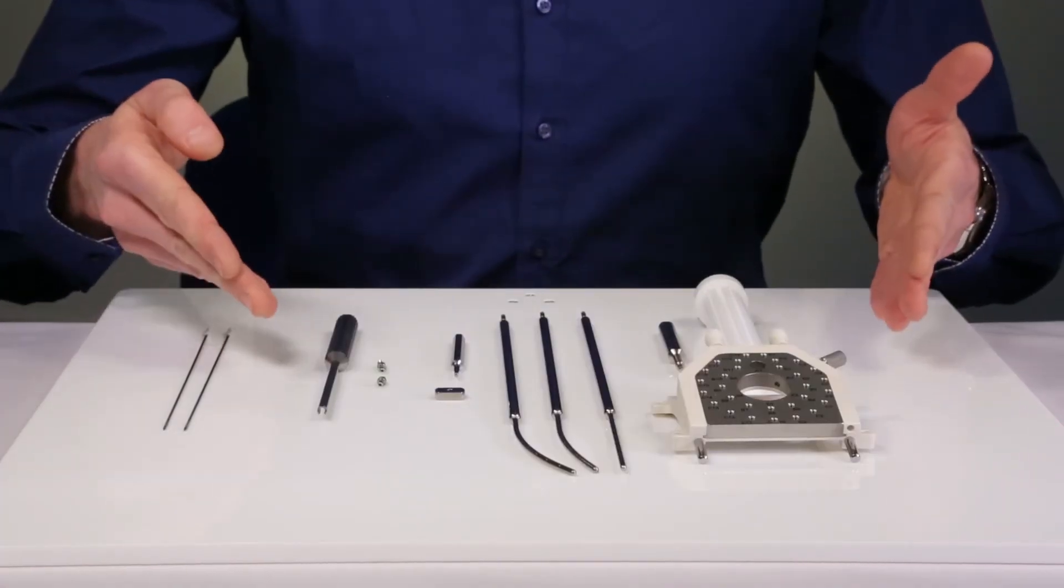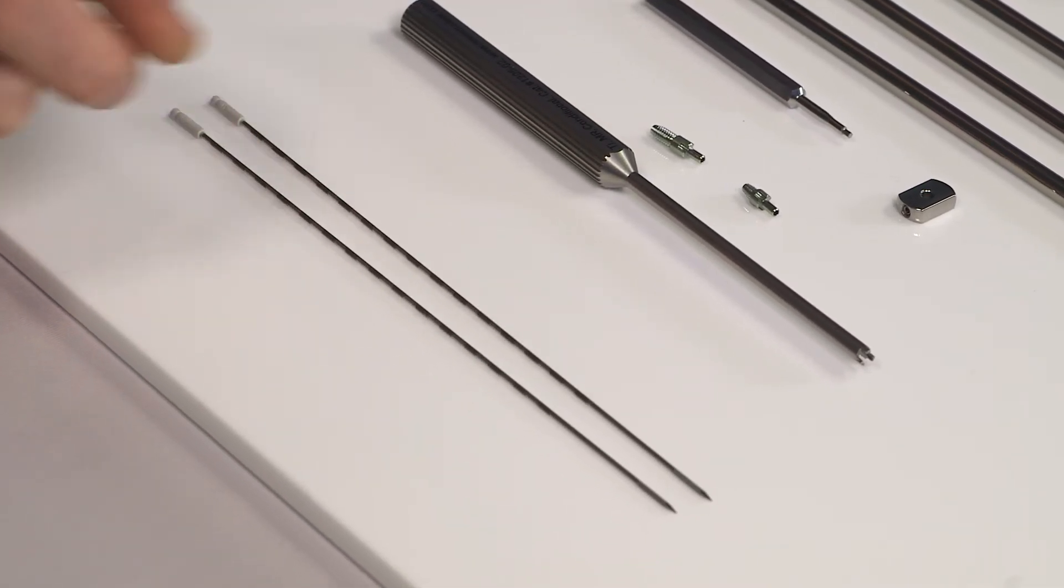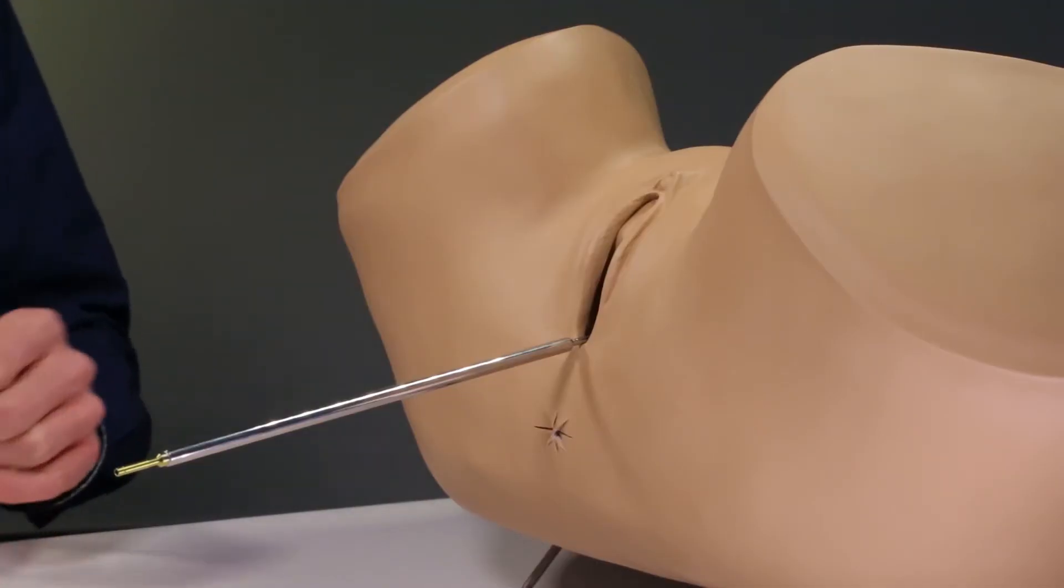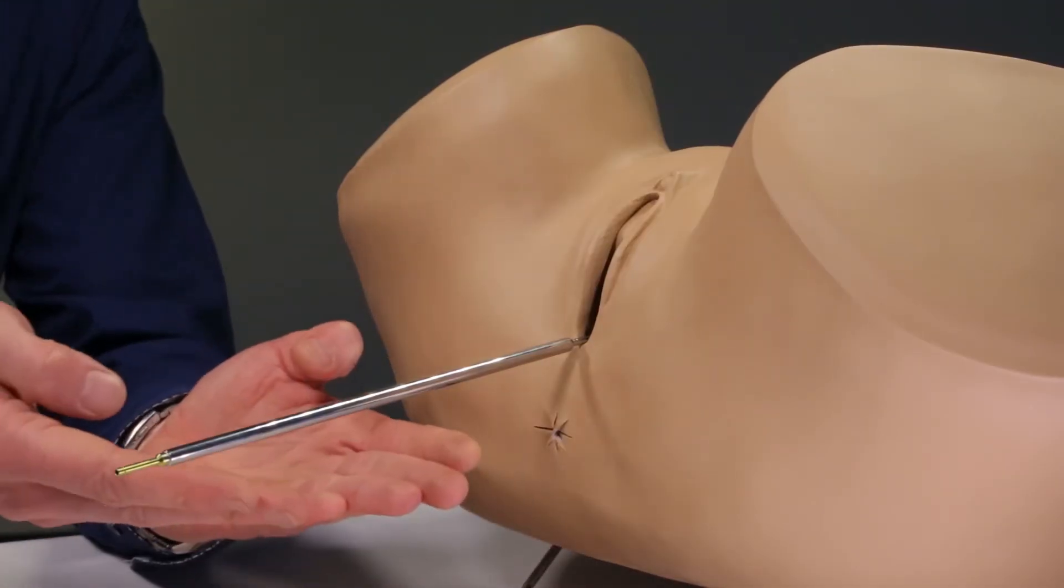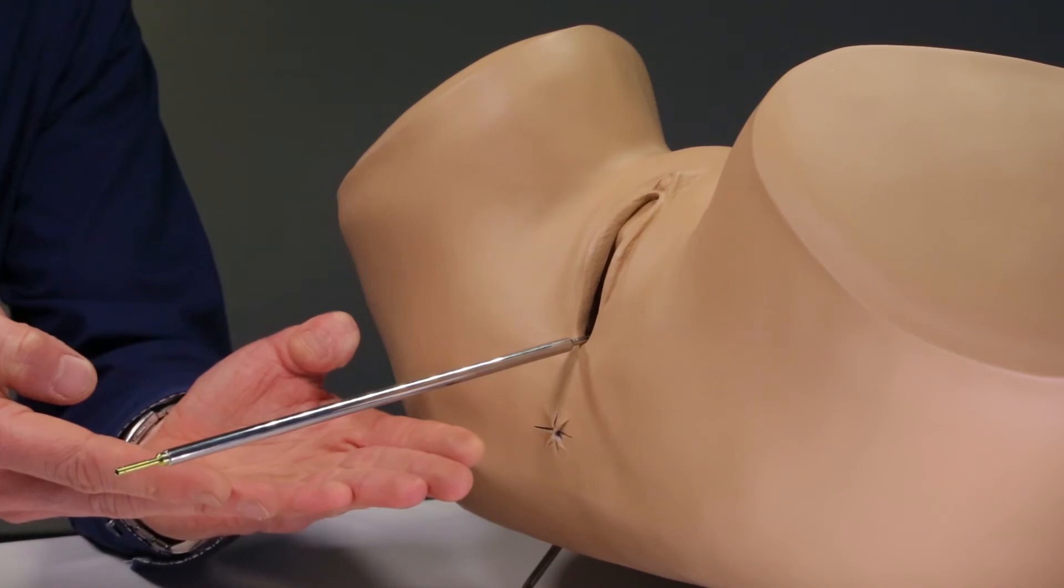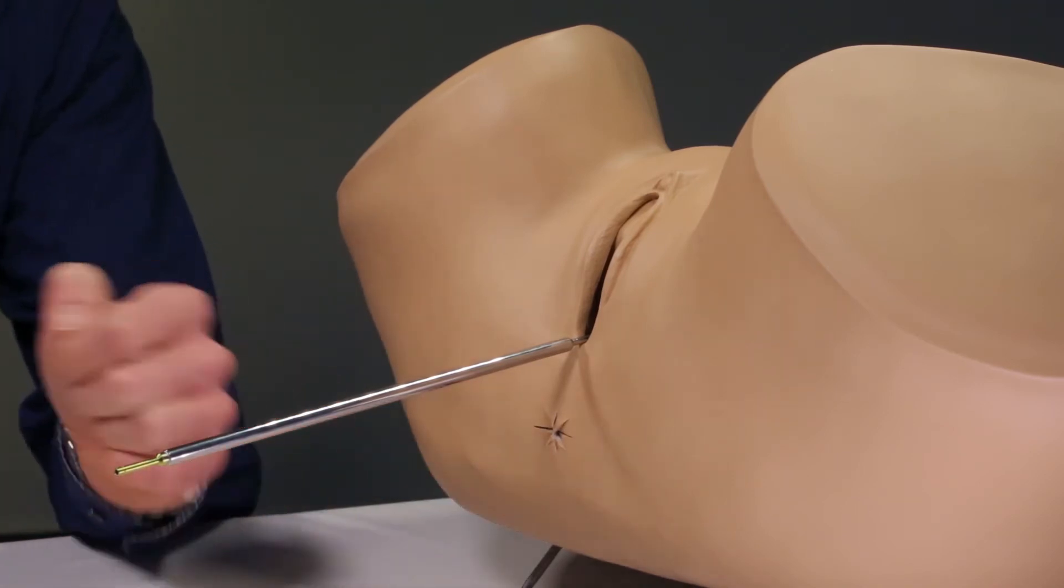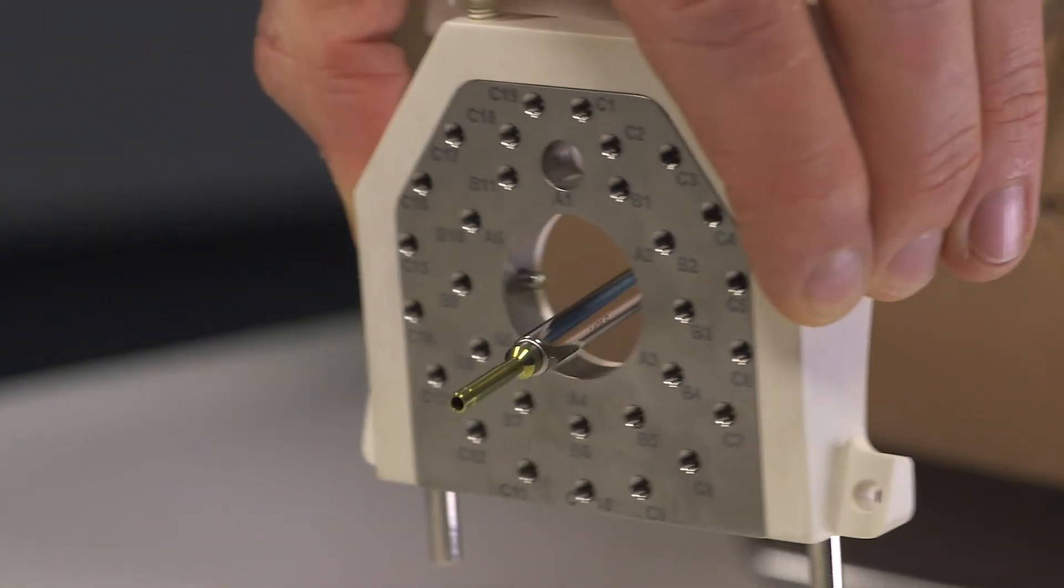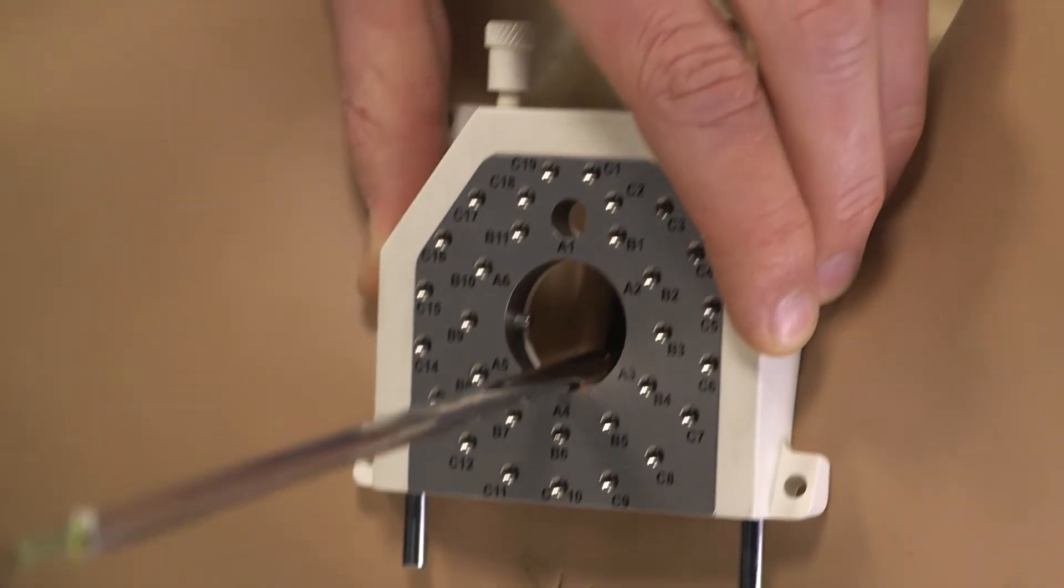In addition to the template set you will require interstitial needles. Let's begin with the assembly. We can assume that the intrauterine tube is already inserted into the patient's uterus. We begin the assembly by guiding the template through the proximal end of the IU tube to the patient's perineum.